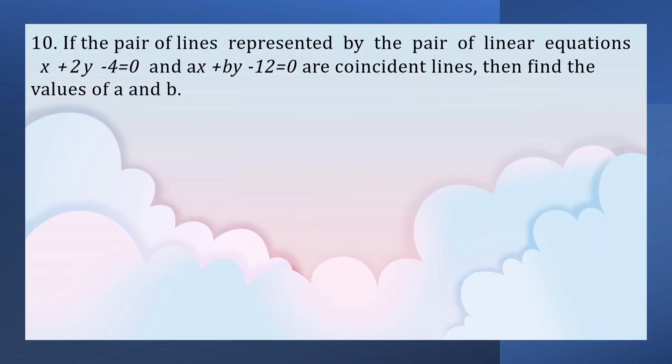If the pair of lines represented by the pair of linear equations x plus 2y minus 4 equals 0 and ax plus by minus 12 equals 0 are coincident lines, then find the values of a and b.